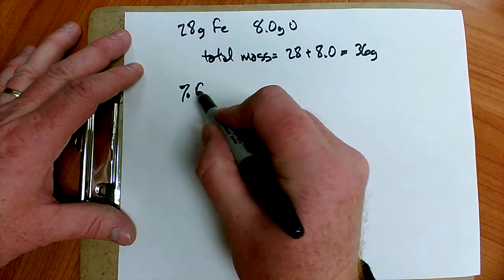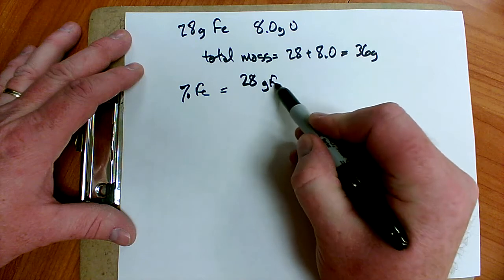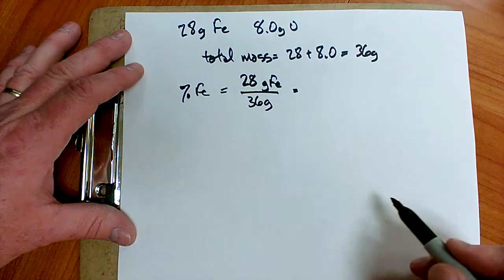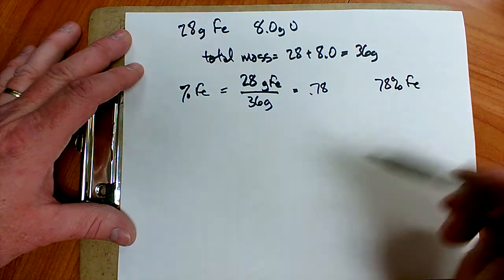Then to find the percent iron, I simply take the mass of the iron, 28 grams of iron, divided by the total mass, 36 grams, and I get 0.78, or 78 percent of the sample is iron.